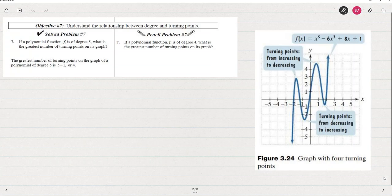We looked at the intermediate value theorem and the definition of a polynomial function. What we're going to pick up with now is turning points in a polynomial and its graph, and then we'll look at graphing a polynomial.